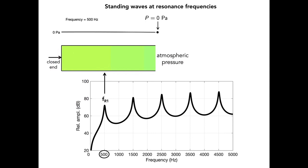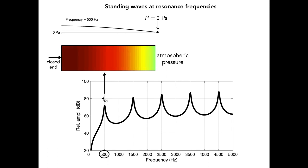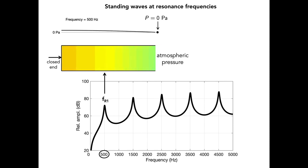When a sinusoidal wave with a frequency matched to the first resonance of the uniform tube is injected through a tiny aperture at the closed end, a standing wave is produced within the tube that extends along its length. In the case shown here, the frequency of the input sinusoid is 500 Hz, the same frequency as the first tube resonance. The acoustic pressure along the tube length is shown as a variation in color: the deepest red indicates large positive pressure, the deepest blue indicates large negative pressure, and light green represents zero or atmospheric pressure.